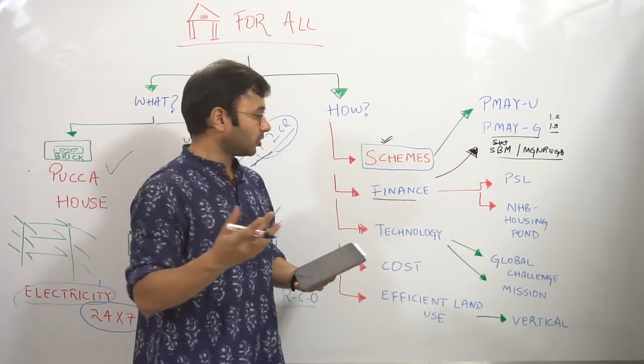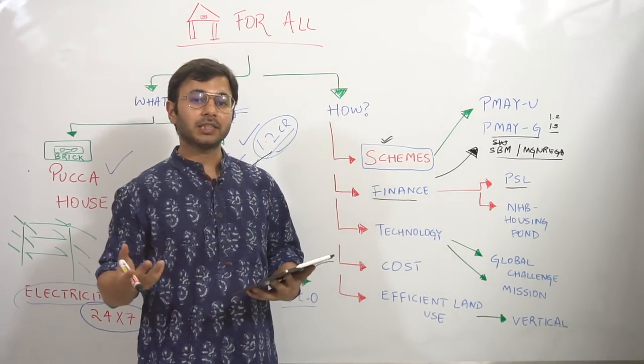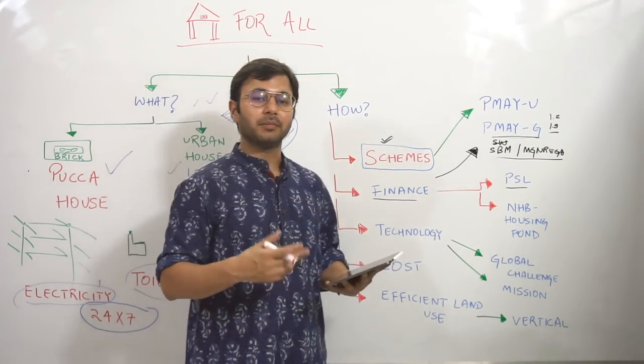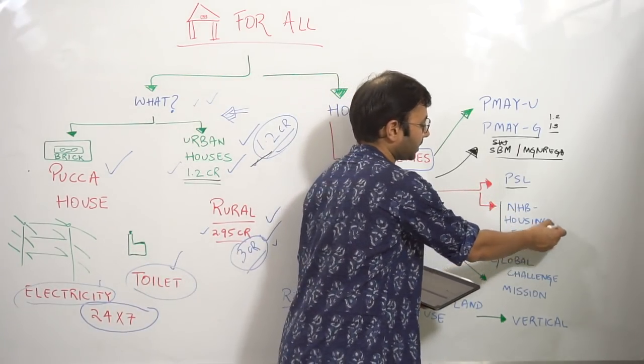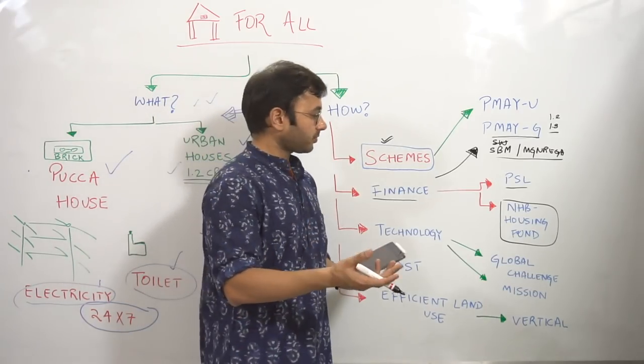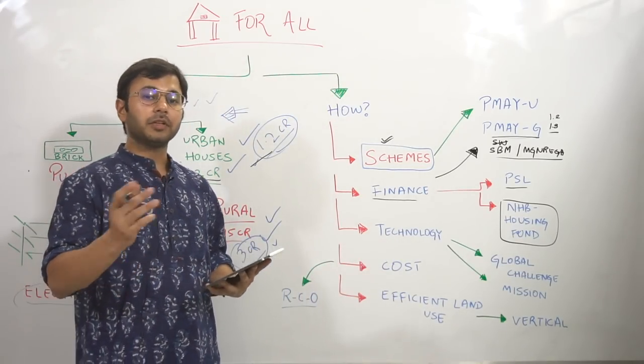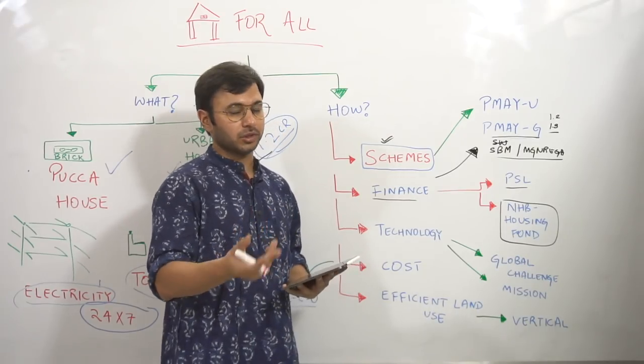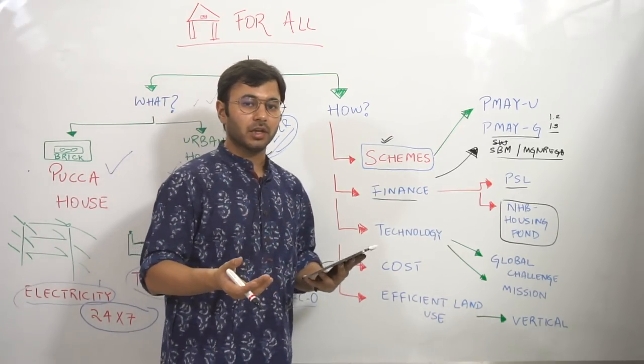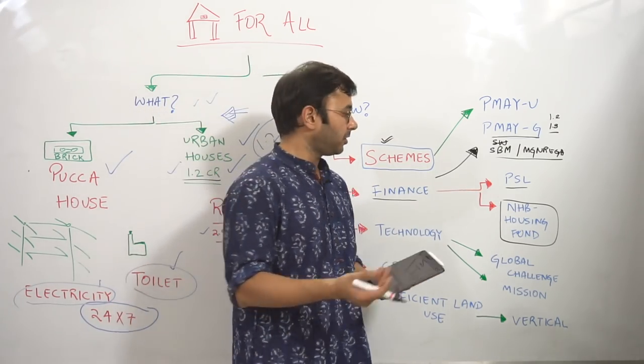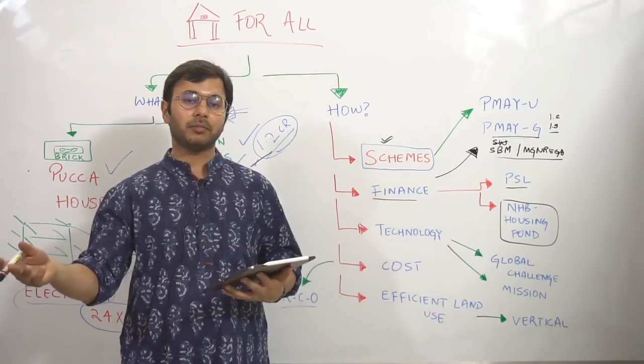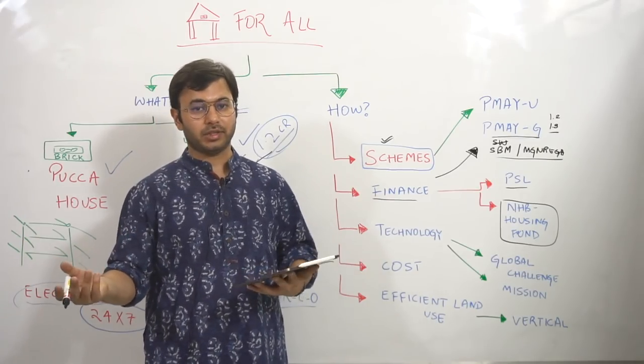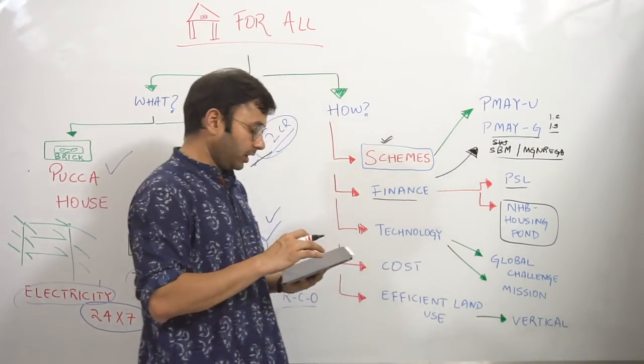It does not mean merely allocation of finance under these schemes. That is one part of it, but that is not all. The Niti Aayog says that you need to create a sub category under priority sector lending, which ensures that you are providing some money to housing for all. And third is a national housing fund under NHB needs to be created, which will also provide funds to banks, which will in turn use these funds in order to finance housing for all.